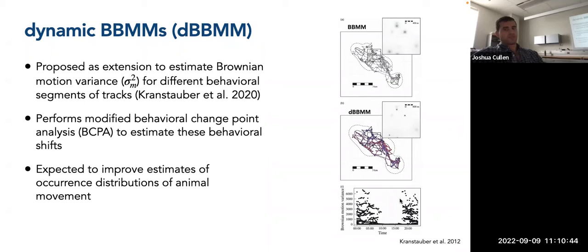The paper proposes that changes in Brownian motion variance can be used to estimate behavioral shifts over time, though this is much more difficult to interpret compared to the behavioral state estimation models covered previously. For this fissure, the Brownian motion variance is high at night because the animal is more active at night with many different movement patterns occurring, whereas during the day it's resting, so the variance is very low.